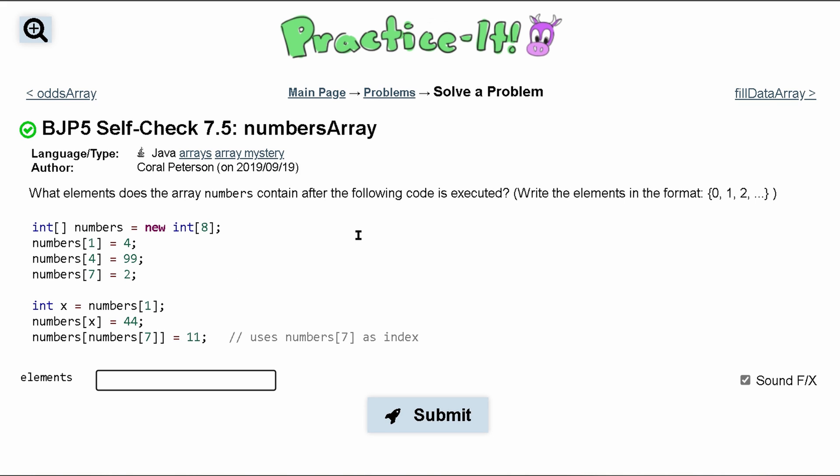What does the array numbers contain after the following code is executed? So we have our array declaration right here. We're not initializing anything. Well, we initialize it with a size of eight and we're filling in these numbers as we go through.